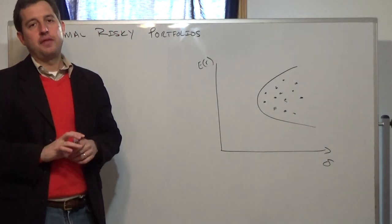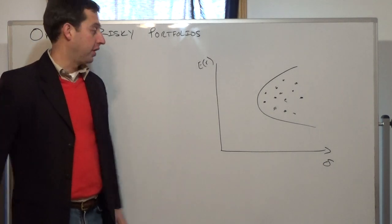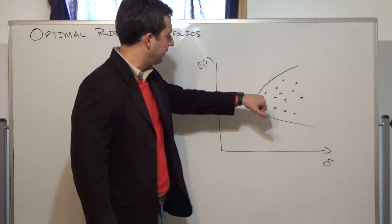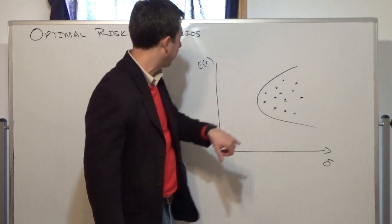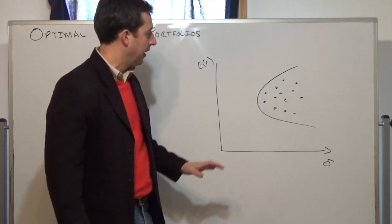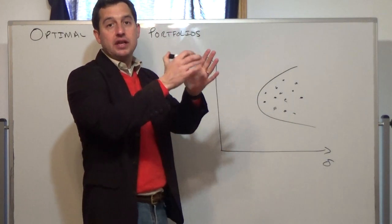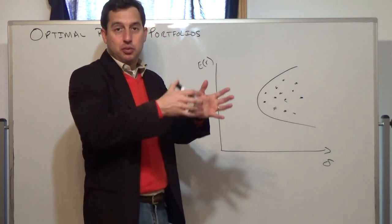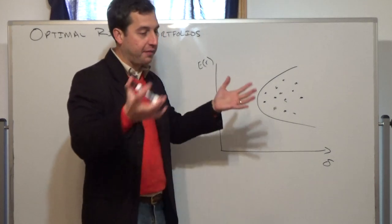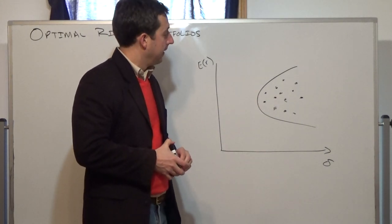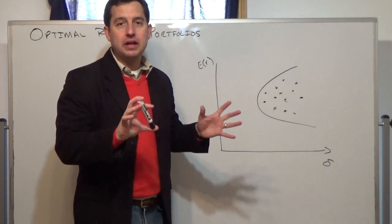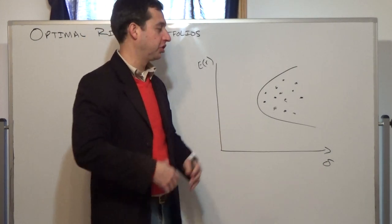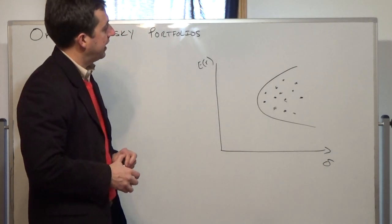Here we're going to talk about the construction of optimal risky portfolios. What we're given is, in general, n assets. Each asset i has an expected return and a standard deviation. So we have n assets, and for each asset an expected return and a variance-covariance matrix between all of these assets. The variance-covariance matrix has to be positive definite. Within Markowitz, we just assume for now that we know these inputs.